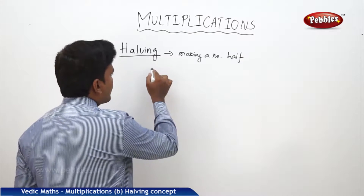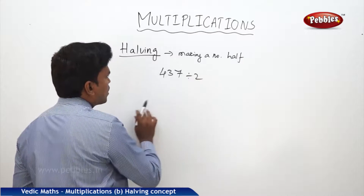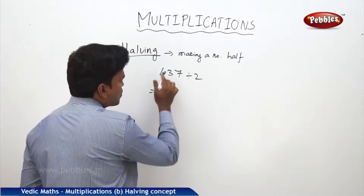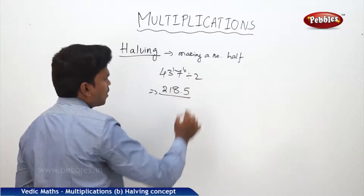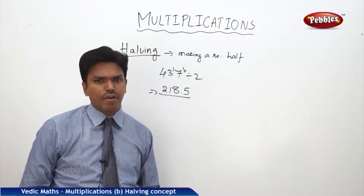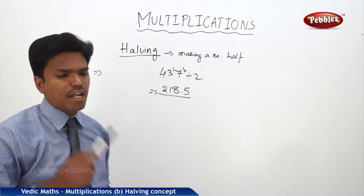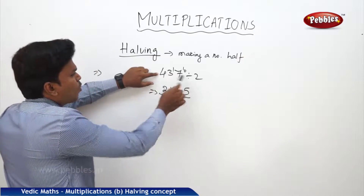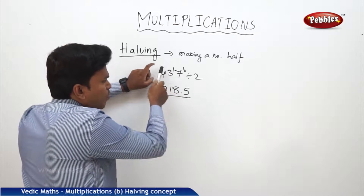Let us take an example. Suppose I want to divide 437 by 2. Simply, I will half this number. 2 goes into 4 two times, 2 goes into 3 one time with remainder 1, so it becomes 17. 2 goes into 17 eight times with remainder 1. So 437 divided by 2 gives 218.5.